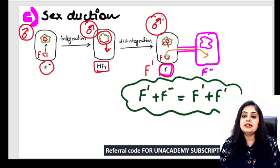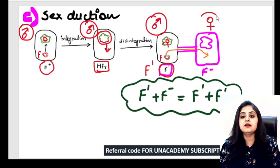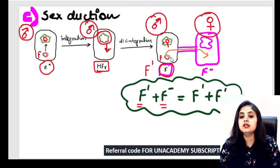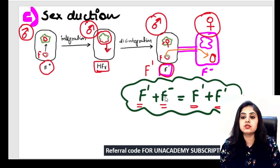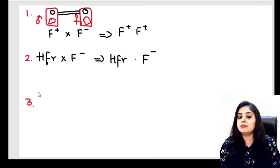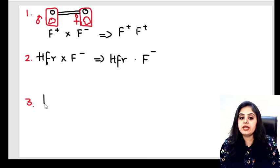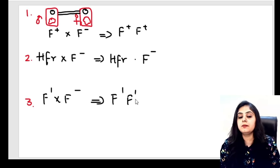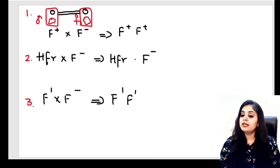When an F′ male conjugates with an F− female, the entire F′ factor transfers to the female. So both the male and the female end up becoming F′ and F′. Let's do a recap: when the male is F+, both end up F+. When the male is F′, both end up F′. The only exception is HFR — HFR cannot make the female positive. In an HFR scenario, the female will always remain F−.